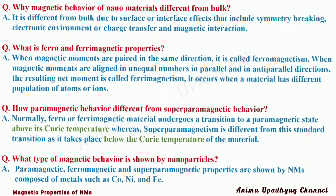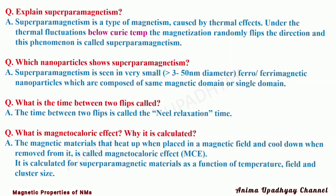How is paramagnetic behavior different from superparamagnetic behavior? Normally, ferro or ferrimagnetic material undergoes a transition to a paramagnetic state above its Curie temperature. Whereas superparamagnetic behavior is different from this standard transition as it takes place below the Curie temperature of the material. Paramagnetic, ferromagnetic, ferrimagnetic, and superparamagnetic properties are shown by nanomaterials composed of metals such as cobalt, nickel, and iron.